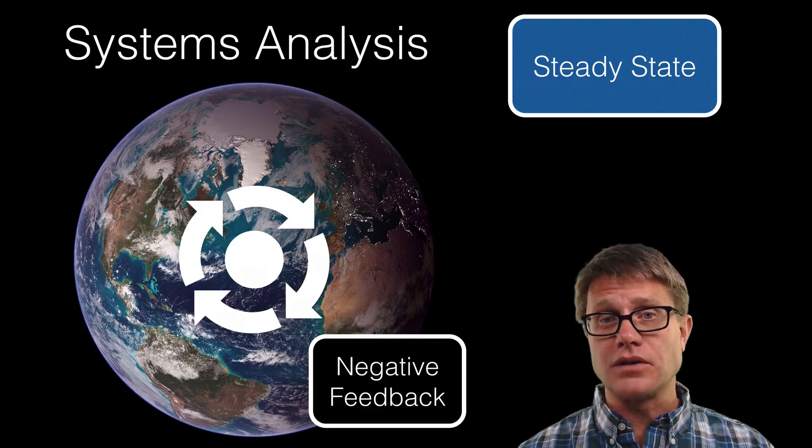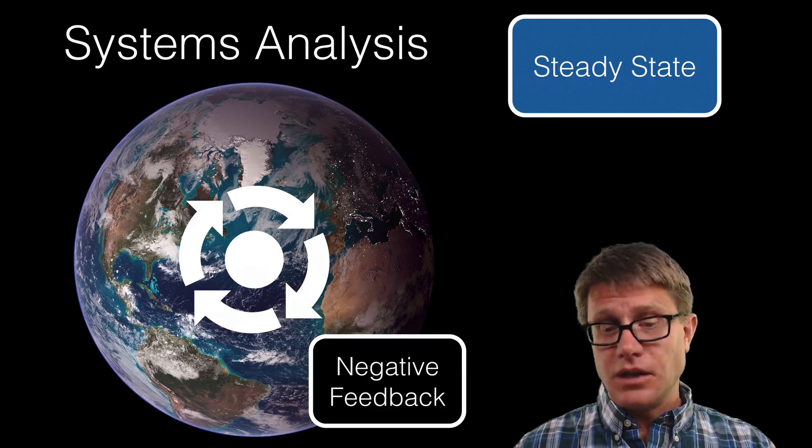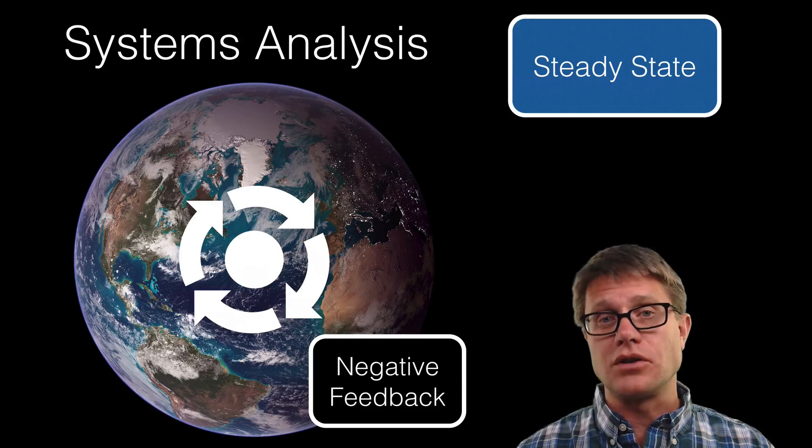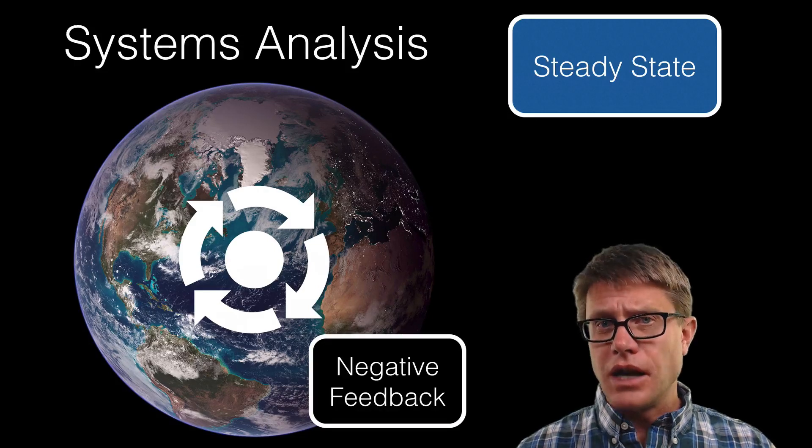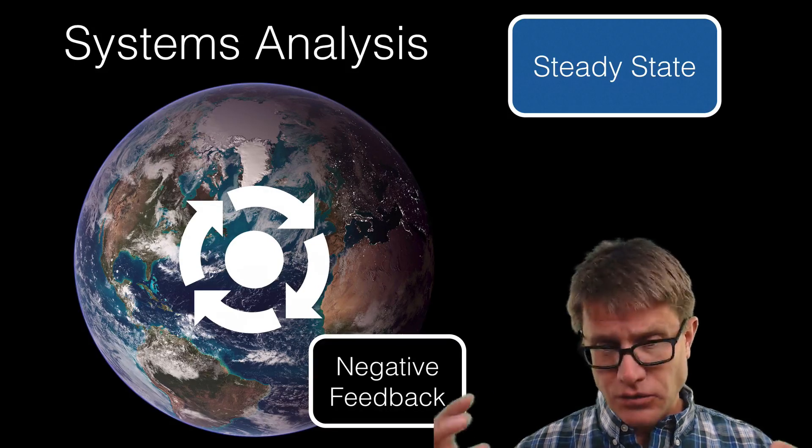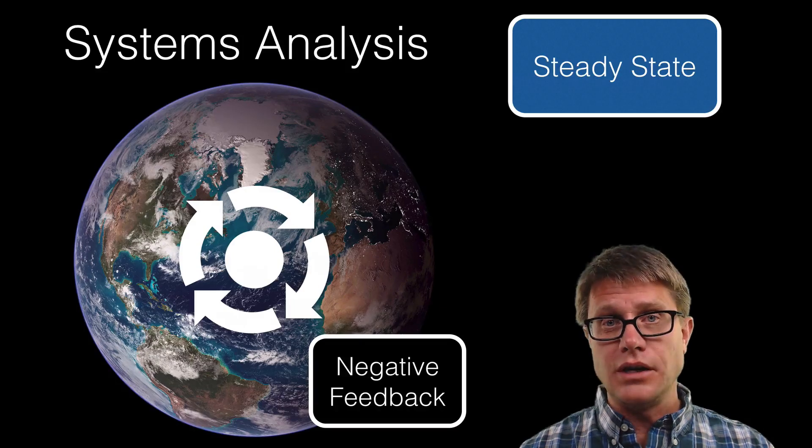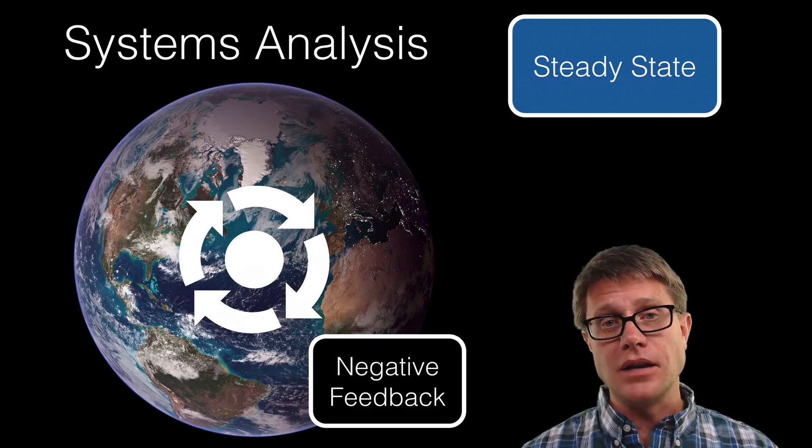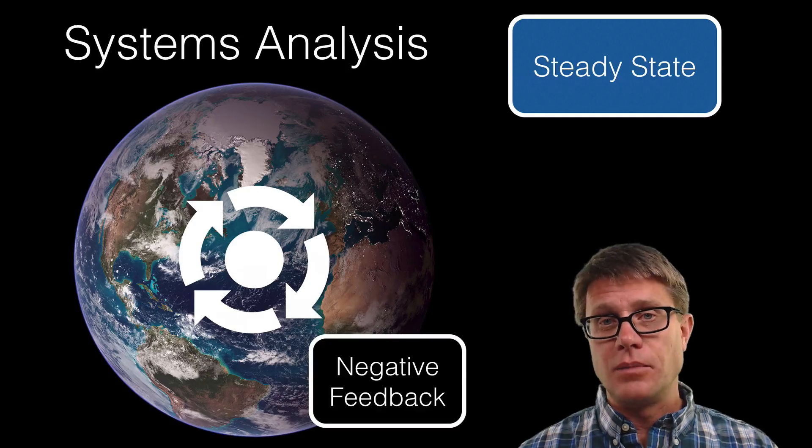We could look at that at the level of the earth system as well. The earth is being heated. We are increasing greenhouse gases. We are increasing the temperature on our planet. There is a negative feedback loop that takes care of that. As we heat up the planet, there is more heat on the planet, what happens? We lose more of that heat to space. That is a negative feedback loop.